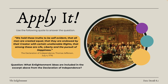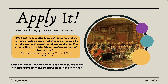Let's apply it. Using this quote from the Declaration of Independence written by Thomas Jefferson on July 4th, 1776: 'We hold these truths to be self-evident, that all men are created equal, that they are endowed by their Creator with certain unalienable rights, that among these are life, liberty, and the pursuit of happiness.' What Enlightenment ideals are included in this excerpt? Write your answer in your Data Decode notes 8.2 and let's discuss it in class or share your thoughts in the comments below.